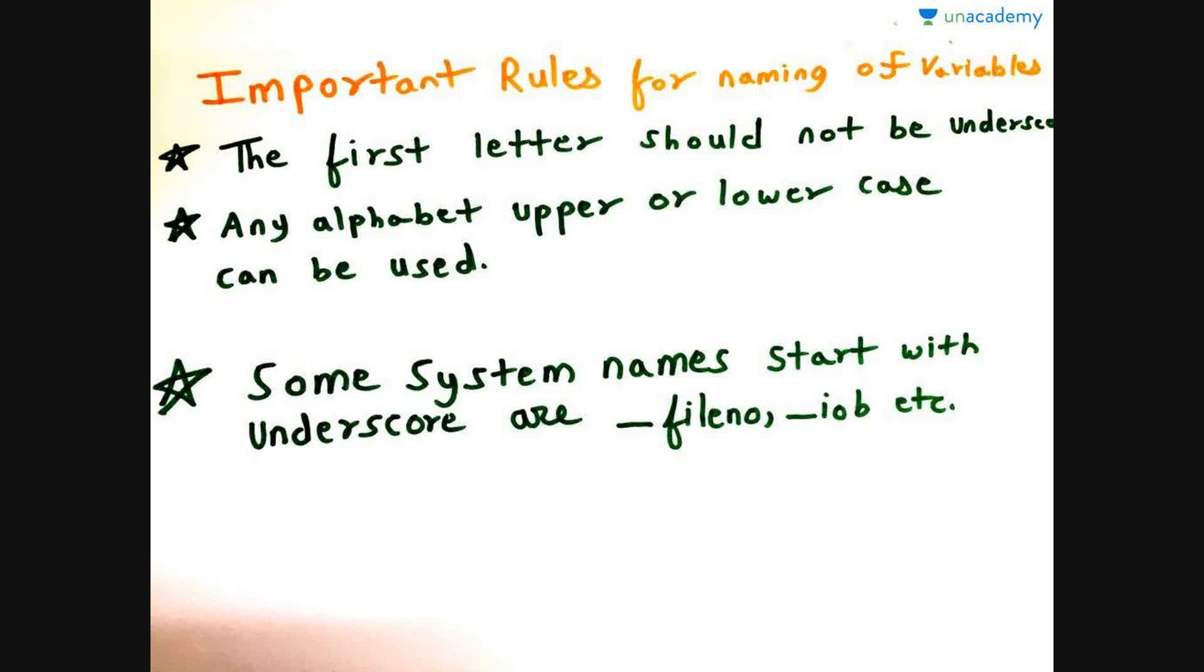Now, there are a few important rules while we name variables. You cannot name them anything, because some words are already predefined as keywords and cannot be used as variables. Variables, as the name suggests, can be changed anywhere in the program. The first letter should be an alphabet, which can be uppercase or lowercase. It can also be underscore, but underscore is not preferred as some system names start with underscore.